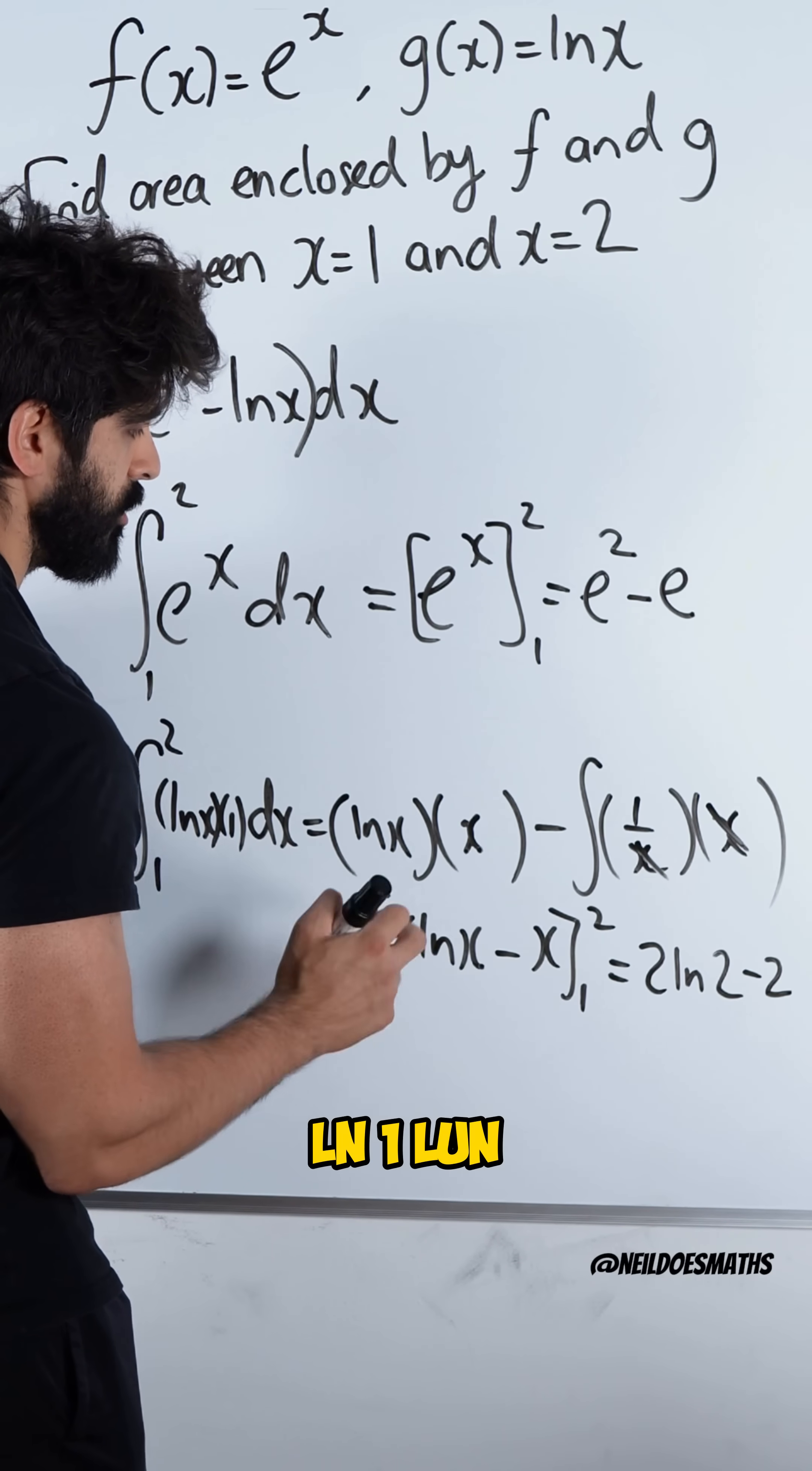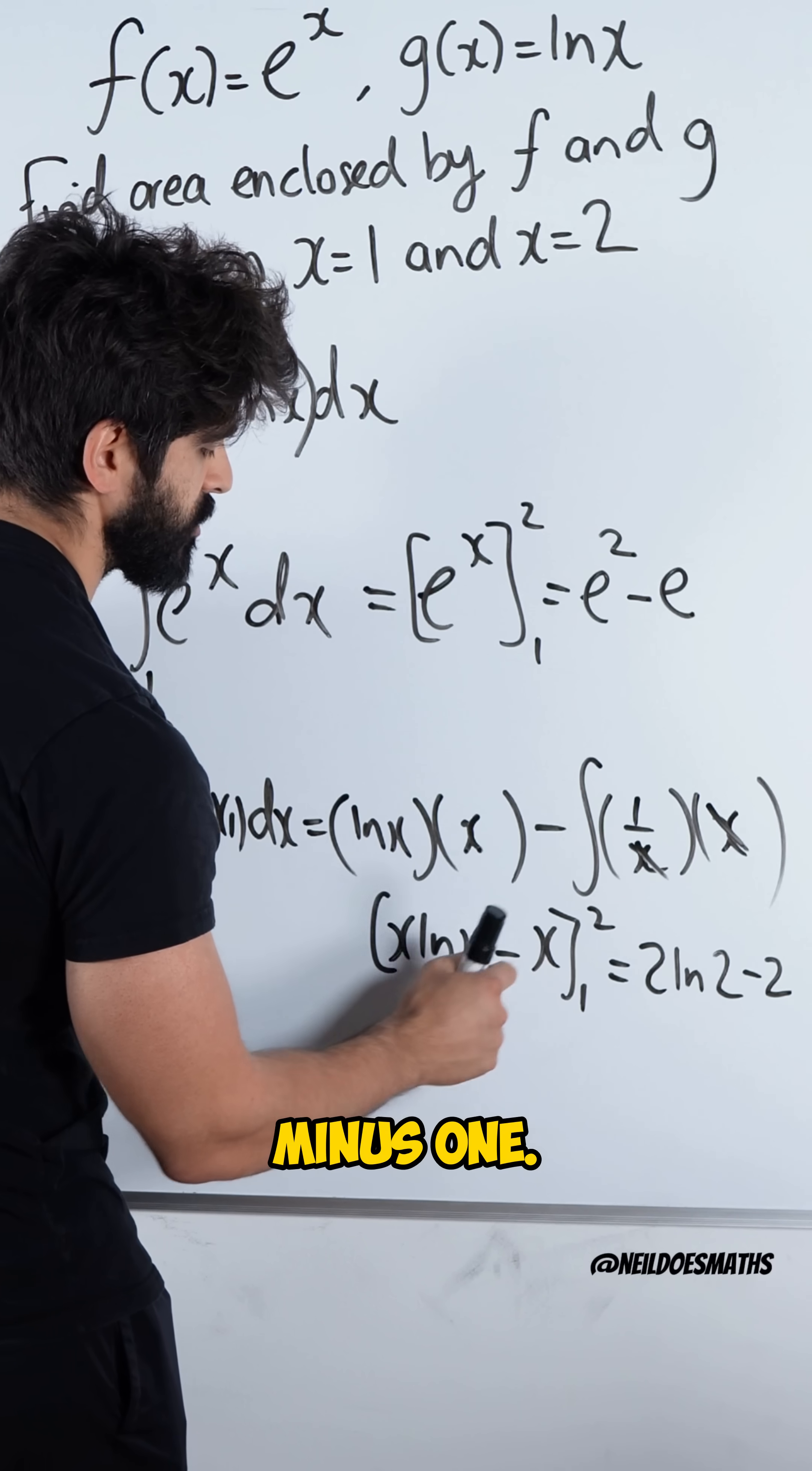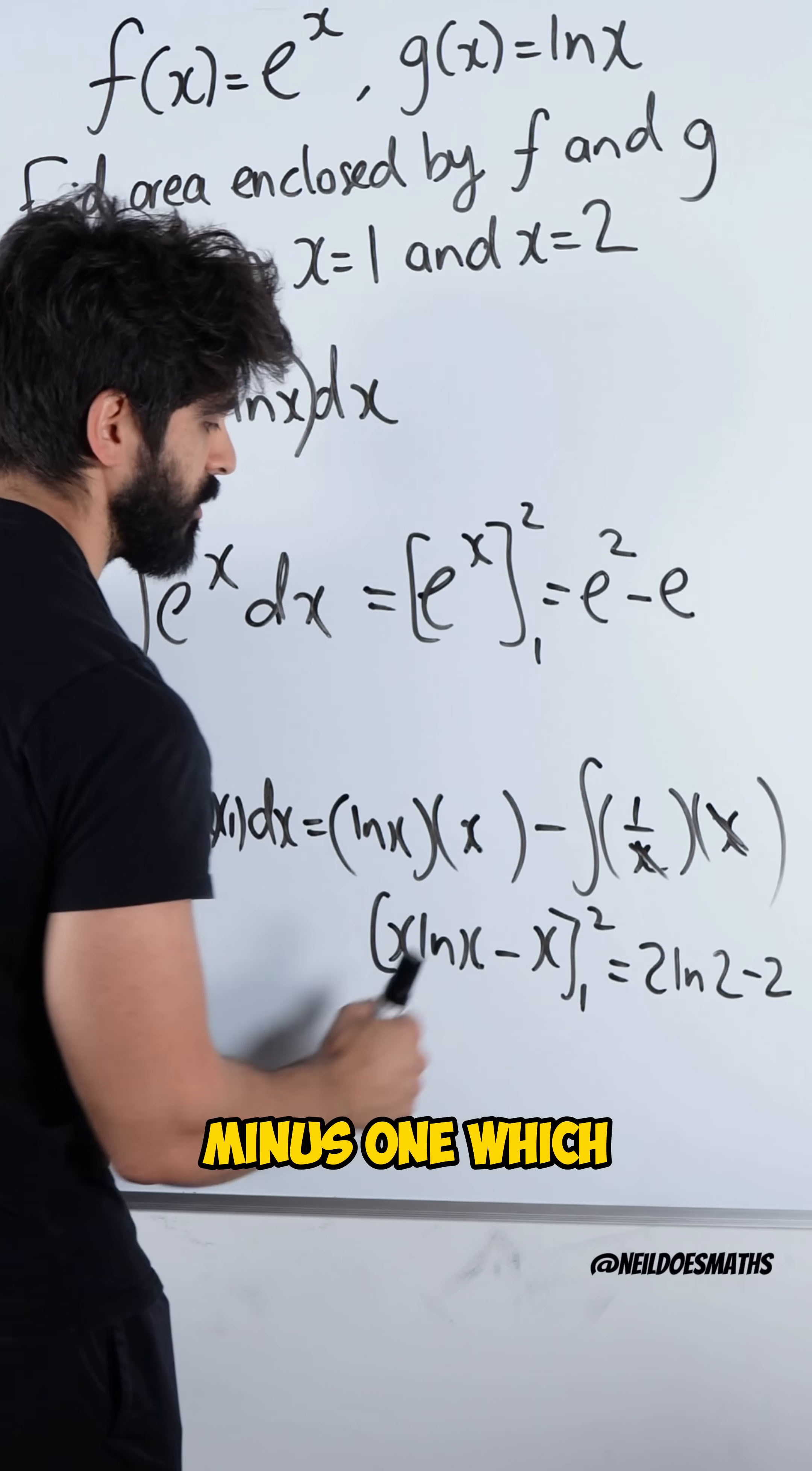Then when you sub in 1, we get 1 ln 1. ln of 1 is 0. Remember, I showed you guys this way across the x-axis. And then we get minus 1. So subbing in 1, we get 0 minus 1, which is minus 1.